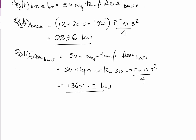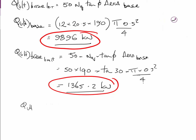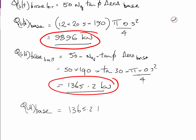The objective was to calculate both values. We can see we're going to work on the lower one of the two: Q ultimate base is 9896 kN and the limited Q ultimate base is 1365 kN. So our design value, Q ultimate base, equals 1365.2 kN.